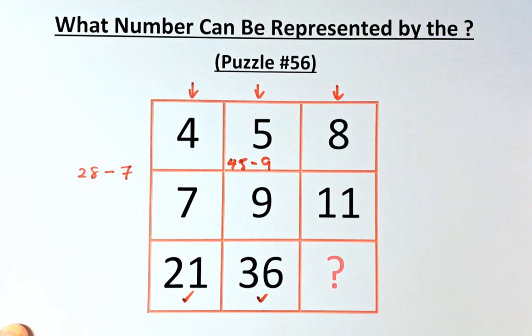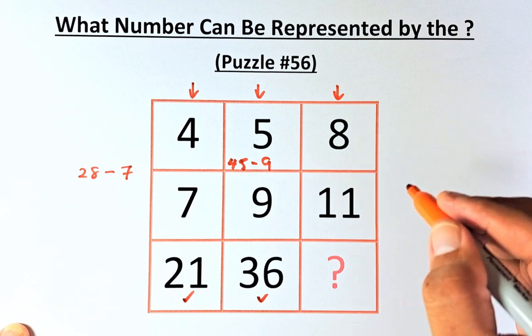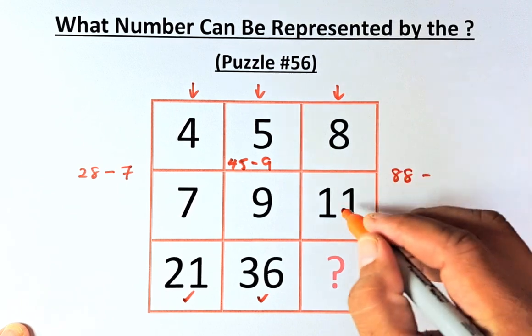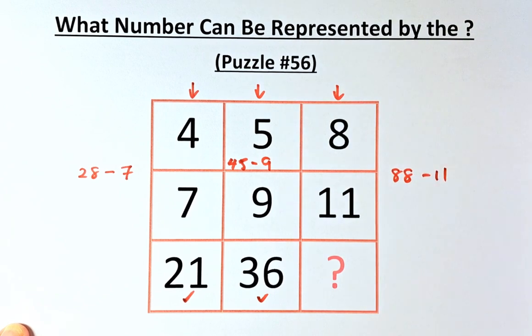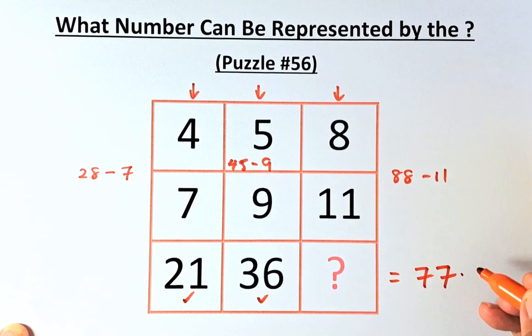So for our third column, 8, 11, and question mark, we know how to do it now. 8 times 11 is going to be 88, and minus the middle number, that's the 11. So 88 minus 11, the answer for the question mark is going to be 77.